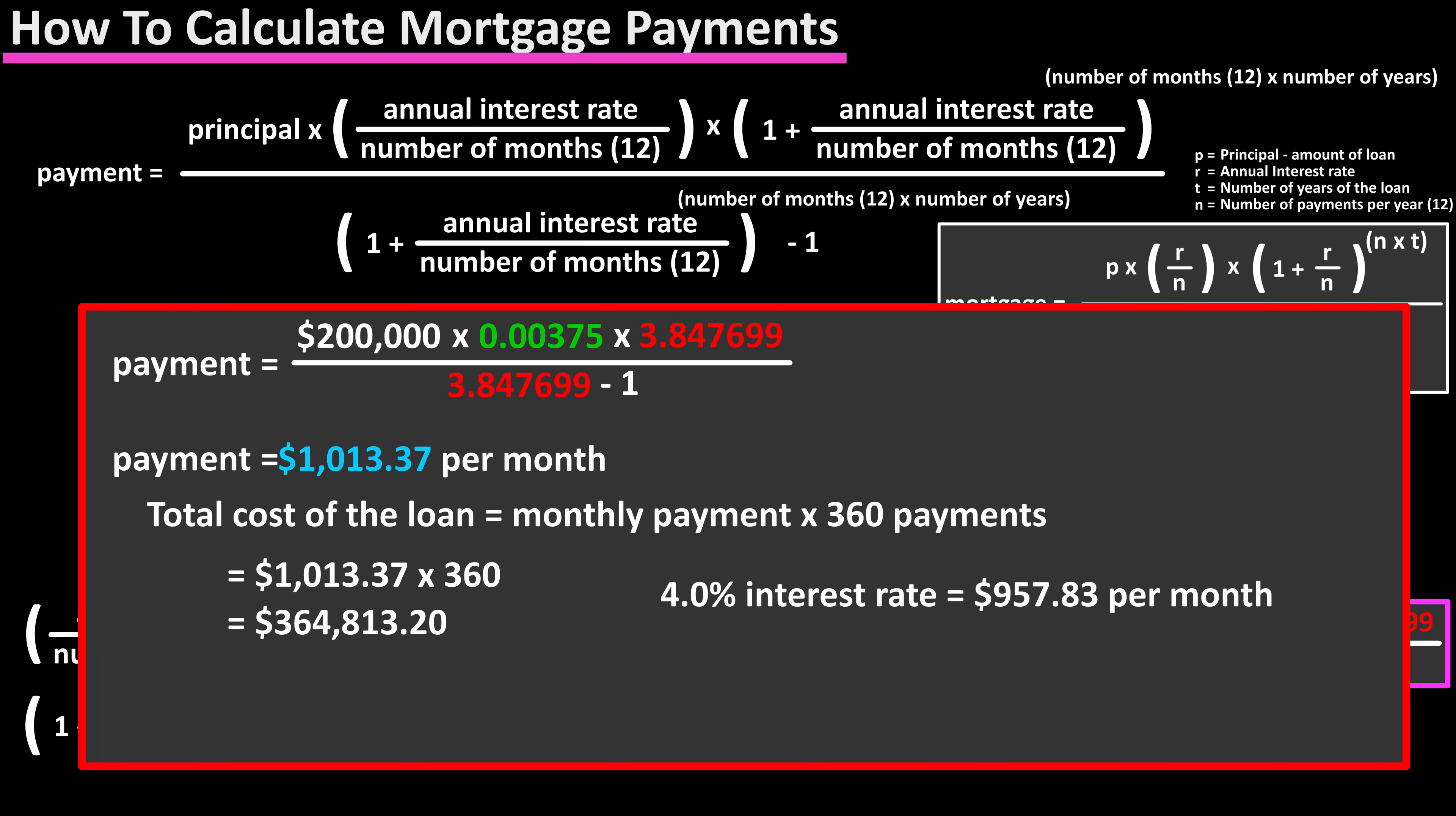If the interest rate was 4.0% instead of 4.5%, this would result in a monthly payment of $957.83 and a total cost of $343,739, so $21,074.20 less, and this is why the interest rate of any loan is so important to you as a buyer.